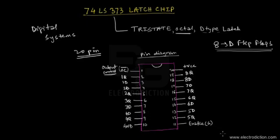You can see that this chip has two control lines. One is pin number 11, that's the enable line, and the other is pin number 1, that's the output control line. You can use these two control lines to control certain features of the chip.